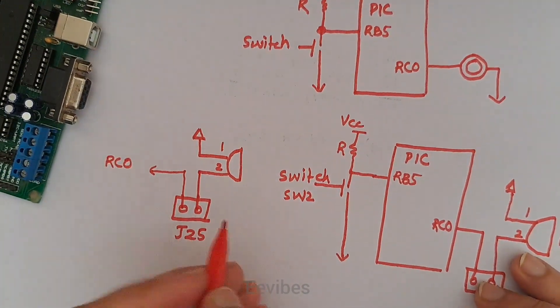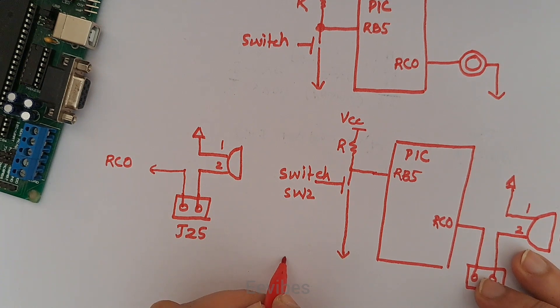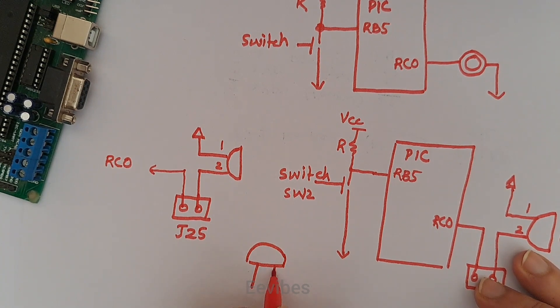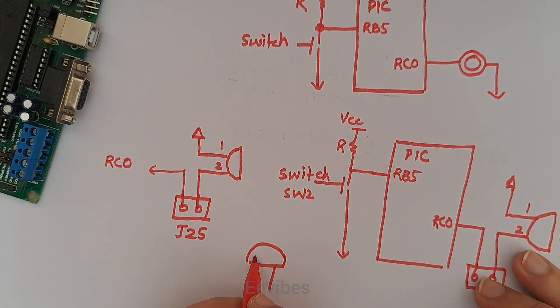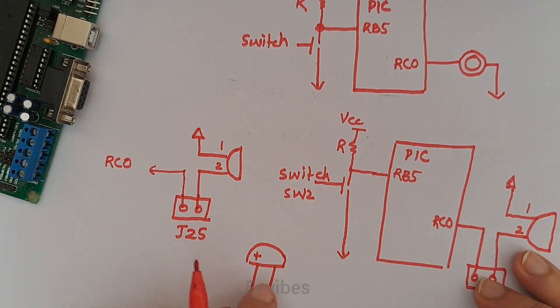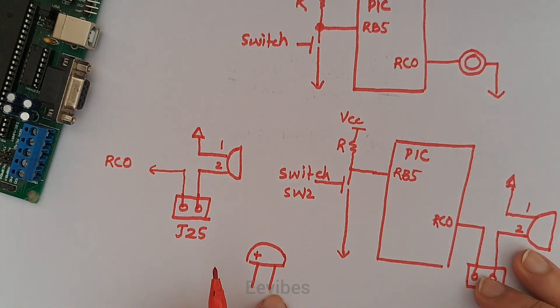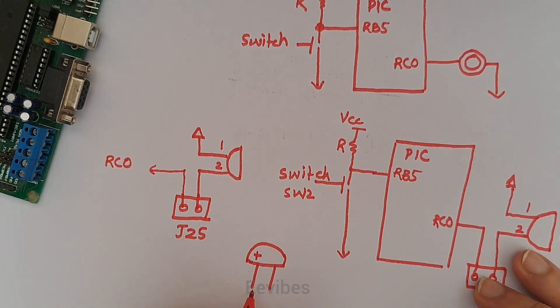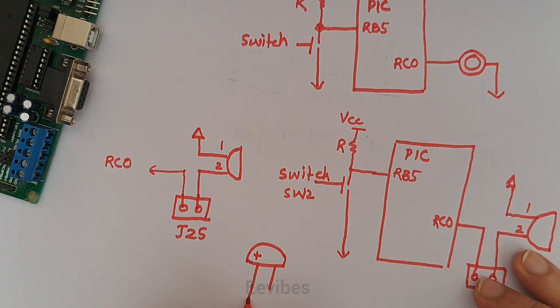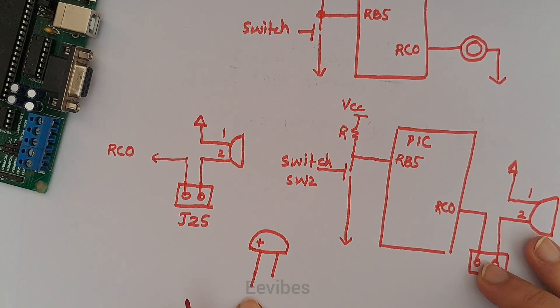A buzzer is a two-terminal device. When you buy a buzzer, some buzzers will have a positive sign indicator indicating the positive terminal while the other terminal will be grounded. Or if the positive sign is not marked, then the terminal that is larger compared to the other one will be the positive terminal.